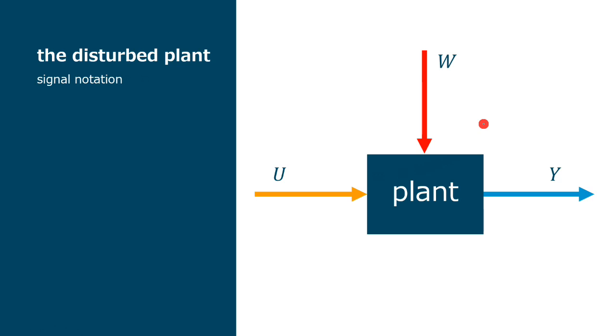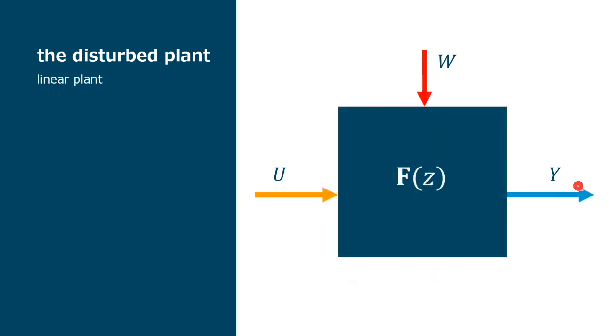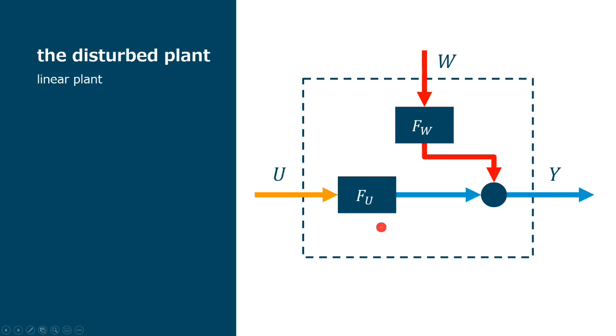Let's identify this uncontrolled input as W. And because of the linearity and the corresponding superposition principle, the output Y results from the sum of two components. The usual one from the controlled input U, here FU, and the second one from the uncontrolled input producing the signal D.